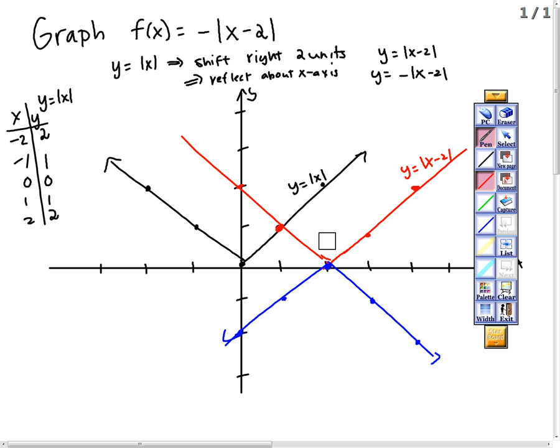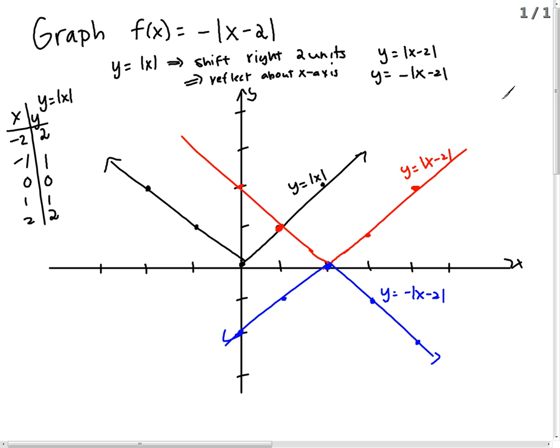The blue one is y equals negative absolute value of x minus 2. Let's look at the blue one, y equals negative absolute value of x minus 2.